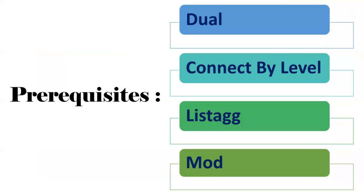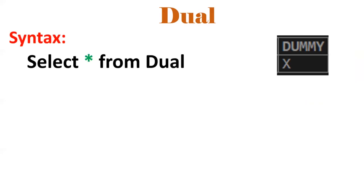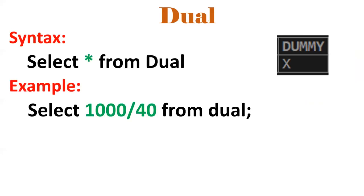Before going to the patterns, let us understand the concepts so that it would be easy to solve the interview questions. DUAL is nothing but a table provided by Oracle. It has one column called DUMMY and it has one value which is X. We can perform any operations by using this dummy table, DUAL.